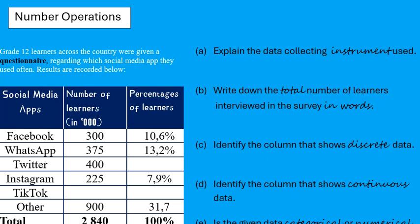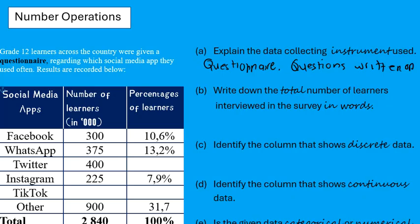Question A: Explain the data collecting instrument used. We are told that a questionnaire was used. A questionnaire is basically questions written on paper where a person is given options to choose from. In this case, people had options — the different apps — to choose their favourite. Remember, an interview or a survey can also be used as a data collecting instrument.